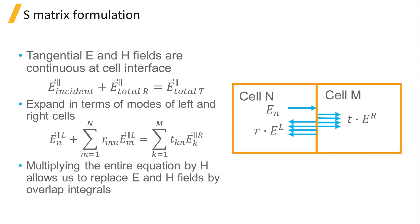These have known values that are calculated during the finding mode step of the simulation. Since we have an equation of this form for each incident mode on the interface, we end up with a system of linear equations which can be solved by matrix inversion to obtain the reflection and transmission coefficients for each mode incident on the interface. A more detailed explanation of the mathematics involved can be found in the reference listed below.